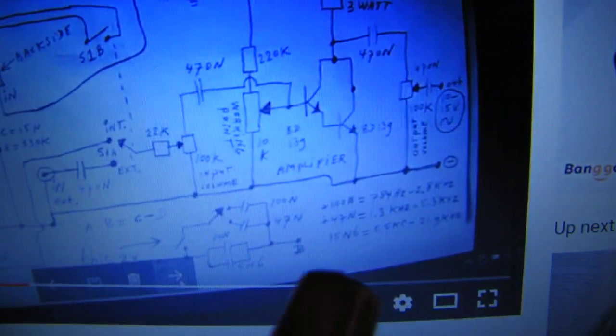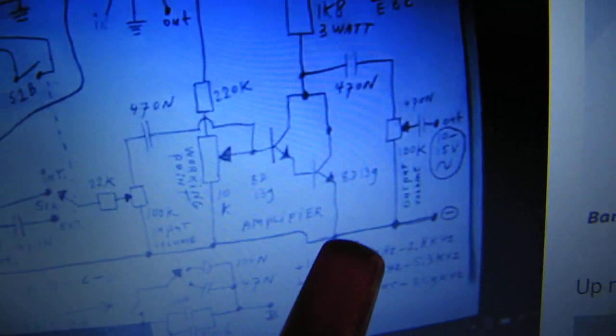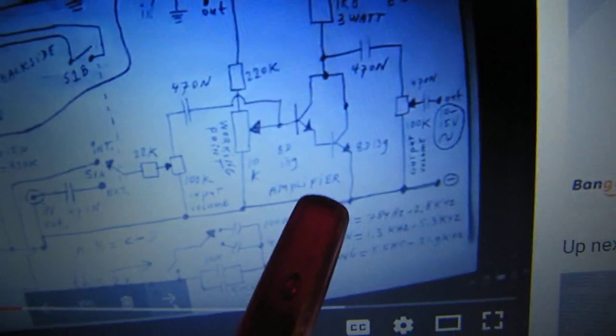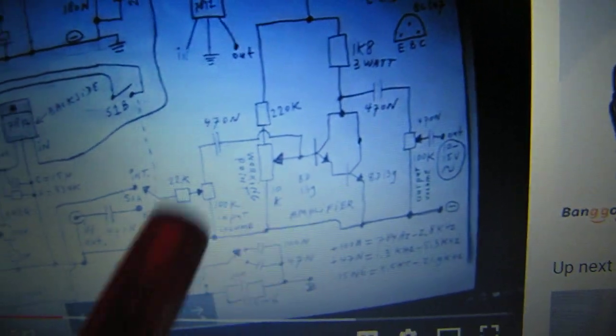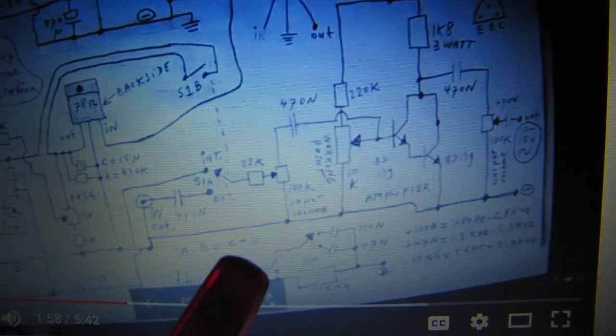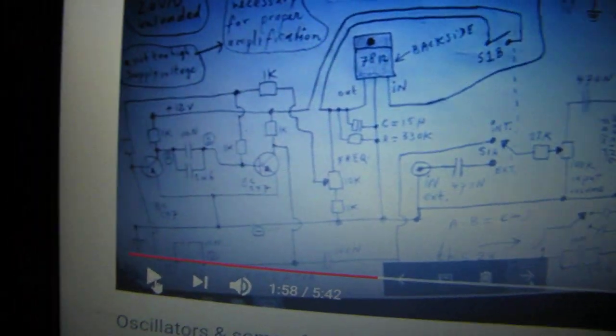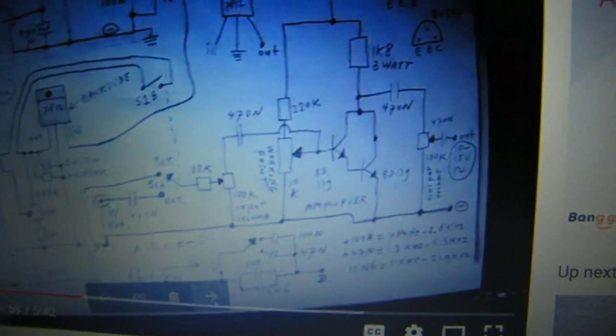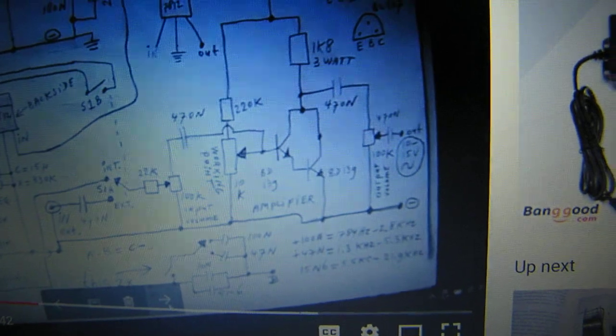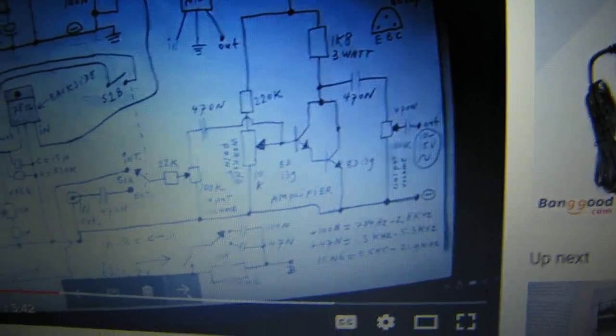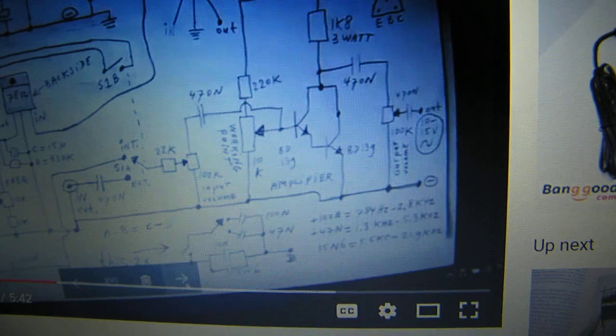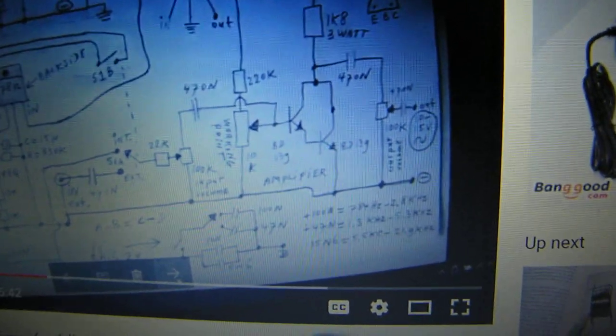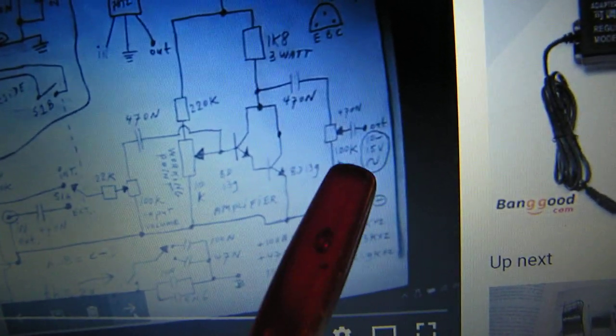And I will give the link so you can study it. Darlington made with two times a BD-139. And with that Darlington we can pump up the signal from this generator, that's here, to a level from say 8 volts or so. That's quite interesting. Sometimes you need an oscillated signal in the audio band that has a certain level.